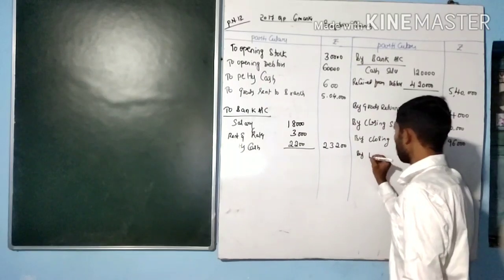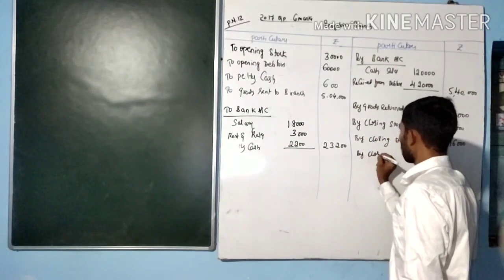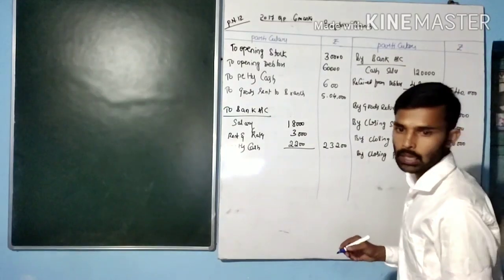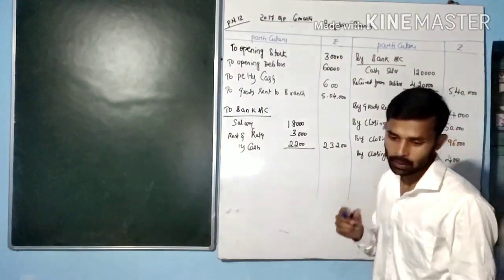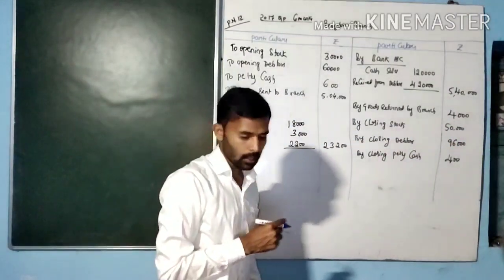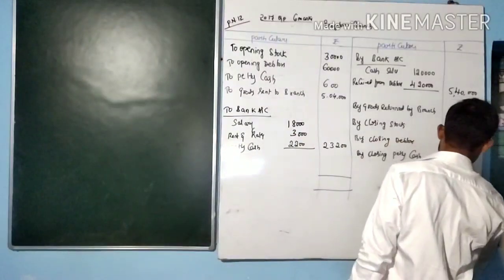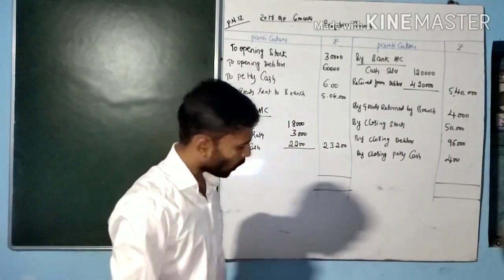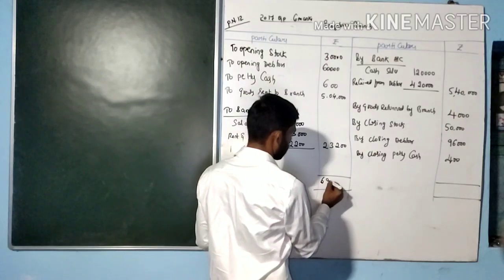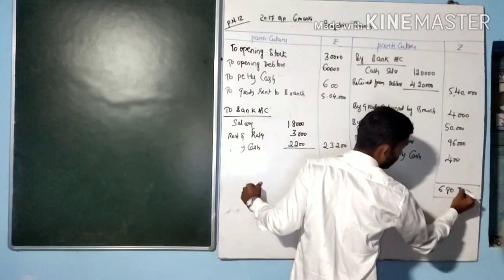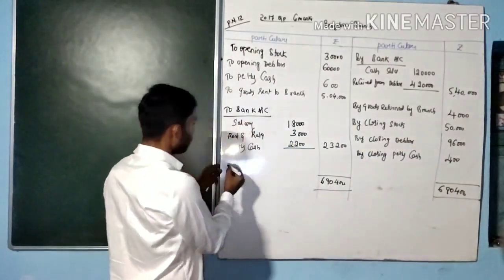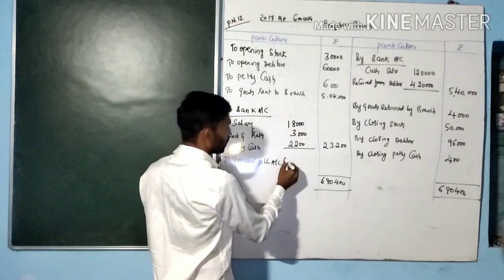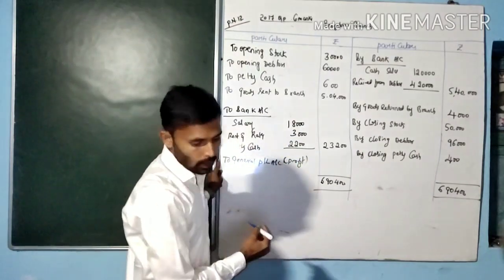Closing petty cash: 400 — credit side. Now make both sides balance. The credit side total is 6,00,90,400. The difference amount goes to the Profit and Loss account — that is profit. Profit is 72,600.